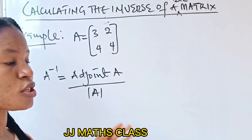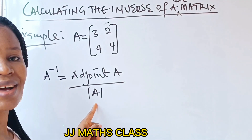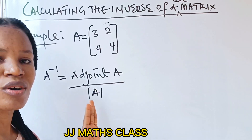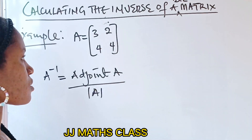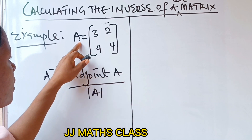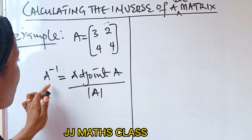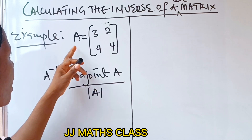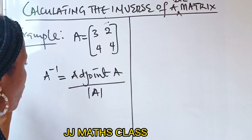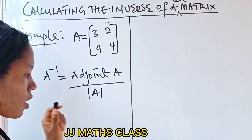I want you to pay attention. Both adjoints and determinants are very easy to get, so it is not a problem at all. Let us go ahead and find A inverse. When you are asked to find the inverse of A, first of all, let's start with the determinant of A.